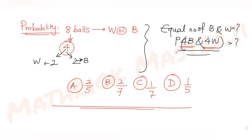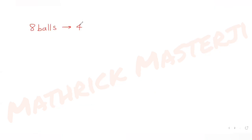We want to find the probability that the bag contains equal number of black and white balls. There are eight balls in total and four are drawn without replacement. So the total number of outcomes is 8C4 — choosing any four from eight. There can be many cases with different numbers of black and white balls.